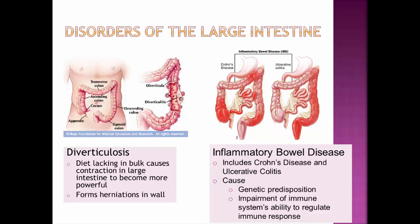These are very serious diseases that cause all kinds of problems. Crohn's disease is typically seen in the ascending colon and cecum, somewhat scattered in the small intestine, and in the sigmoid. Ulcerative colitis tends to concentrate only in the descending colon and the sigmoid colon.